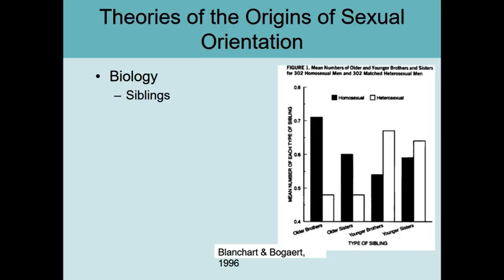They were asked how many older brothers, older sisters, younger brothers, and younger sisters they had. On the y-axis we see the mean number of each type of sibling for each group. Homosexual men had a significantly higher rate of older brothers, and double the number of older sisters compared to heterosexual men. Then you see the pattern kind of flip for younger siblings - heterosexuals are much more likely to have younger brothers, and slightly more younger sisters.